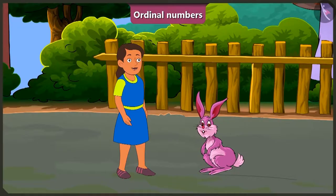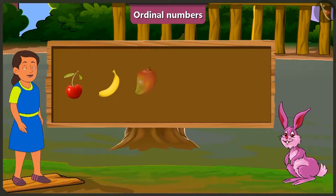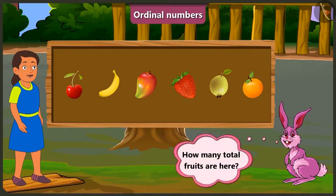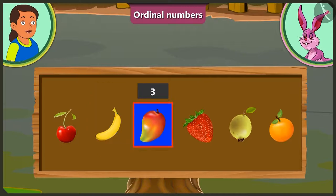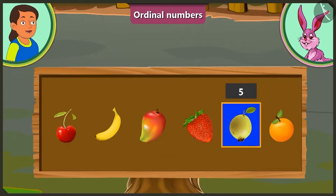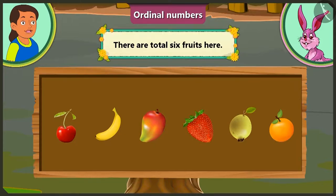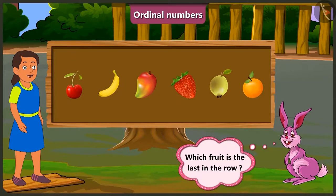Now let us look at the third example. Look here Bubbly, there are some fruits given here. Can you tell how many fruits there are in total? We have one, two, three, four, five, and six — that means there are six fruits in total. Well done Bubbly! Now tell me, which fruit is the last in the row?